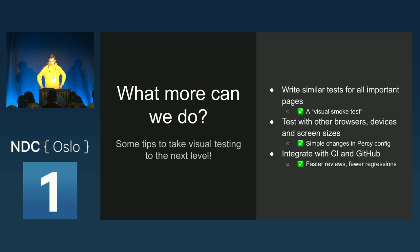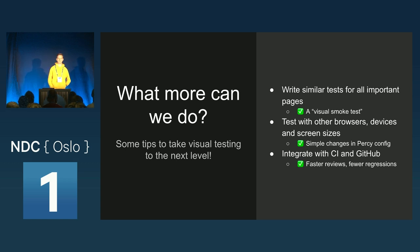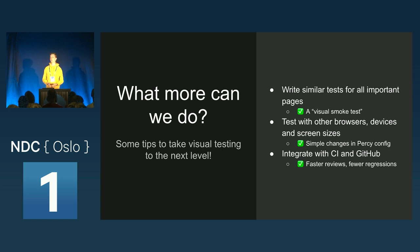What can we do next? First, I would do a similar test for all important parts of your page — just simple tests: go to this subpage, take a snapshot. It's super quick to make, and you get so much value from it. I call this visual smoke testing. Secondly, you can test in different browsers, all major browsers, mobile devices, different screen sizes — and I heard Percy actually supports native mobile apps as well now. And lastly, integrate with CI and GitHub. Make it a part of your whole development process and get it in your reviews.